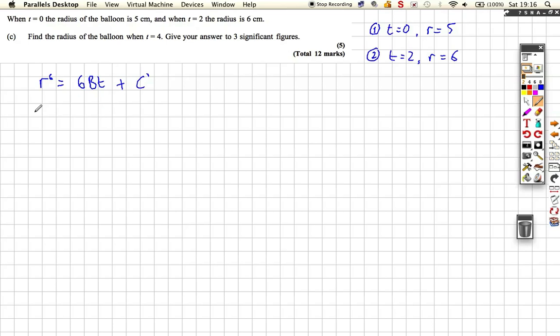Let's use the first set. So using the set of conditions 1, what do we get? Well, we get 5 to the power of 6, which is 15,625, is equal to 0 plus c prime. So that implies that c prime is equal to 15,625. So we've now got r to the power of 6 is equal to 6bt plus 15,625. So we're partway through to get our particular solution, we're halfway there.